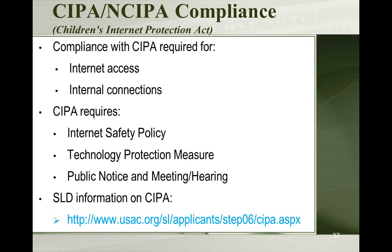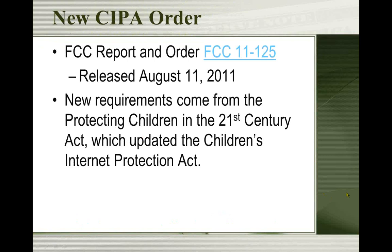CIPA is actually a fairly simple document — about 12 to 13 pages. It requires three basic things: an internet safety policy describing how people use the internet at your library, a technology protection measure — the actual filter itself — and some form of public notification letting your community know you're doing this. There was an update to CIPA in 2011 from the Protecting Children in the 21st Century Act, which updated some requirements with a new FCC report and new procedures.